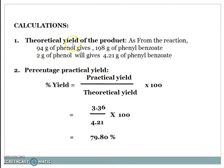Calculations. Theoretical yield of the product: As from the reaction, 94 grams of phenol gives 198 grams of phenyl benzoate. Therefore, 2 grams of phenol will give 4.21 grams of phenyl benzoate.